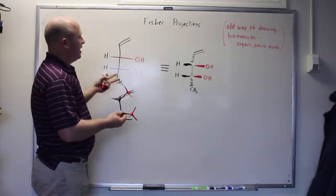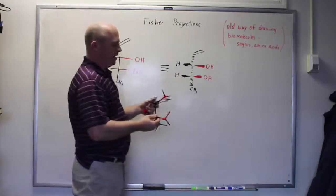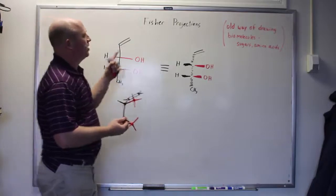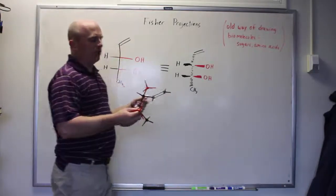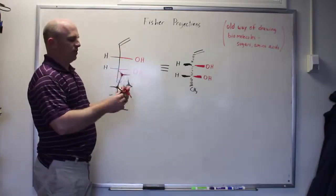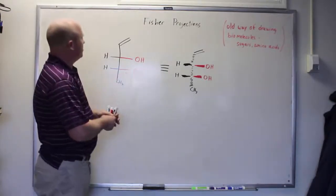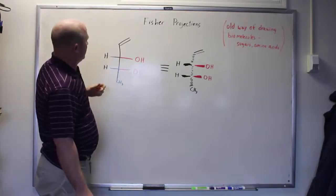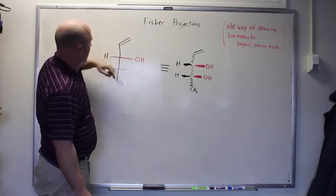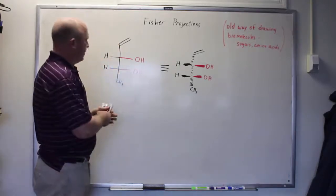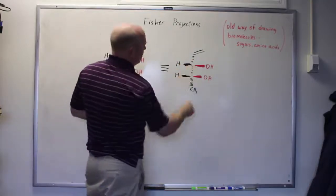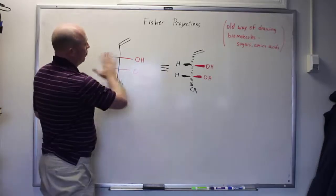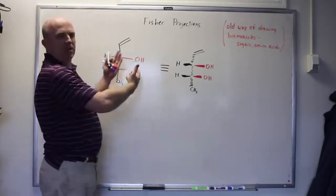These aren't exactly line-angle structures, but you can convert them into line-angle structures through a couple of steps. I'm going to work with Fischer projections largely because it will force you to learn how to manipulate line-angle structures and rotate things very well. So what is a Fischer projection? It's this strange-looking representation of the molecule where you have a vertical line and horizontal lines. Every single vertical line in a Fischer projection is pointed back away from you, whereas every horizontal line is coming toward you.